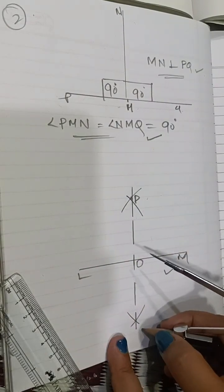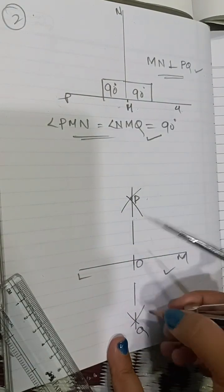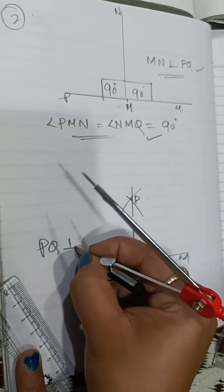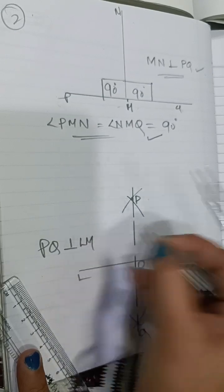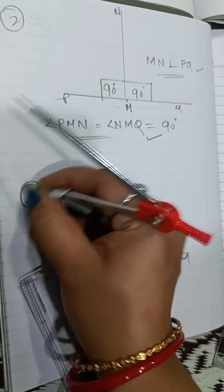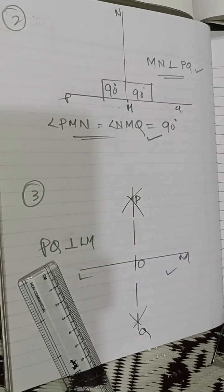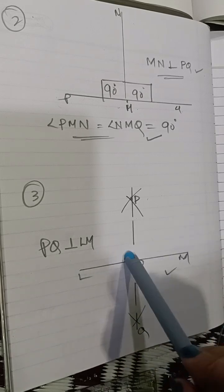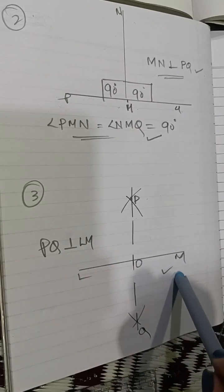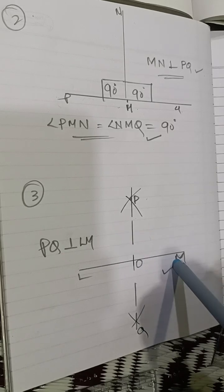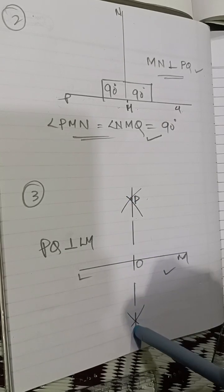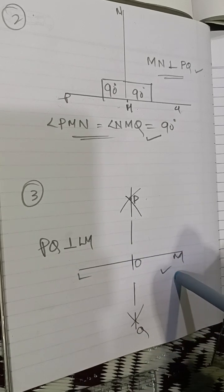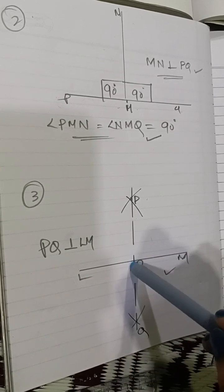Construct a perpendicular from P to the line LM. This is the perpendicular PQ — PQ is perpendicular on the line LM. So PQ is perpendicular to LM and the midpoint is O.